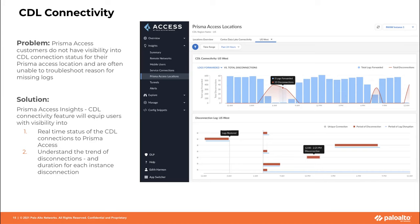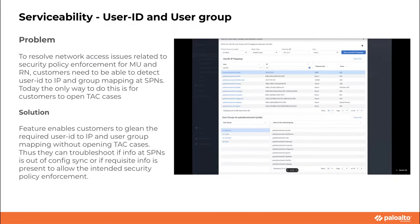You can understand the trend of disconnections and the duration of each disconnection instance. Another enhancement in Prisma Access Insights is the feature for user ID and user group, which enables you to extract the required user ID-to-IP and user group mapping without opening a support case. You can troubleshoot whether information from the security processing node is out of config sync or if required information is present to allow intended security policy enforcement. We will have another detailed webinar on Prisma Access Insights specifically. Calendar information is available on the live community — please register.